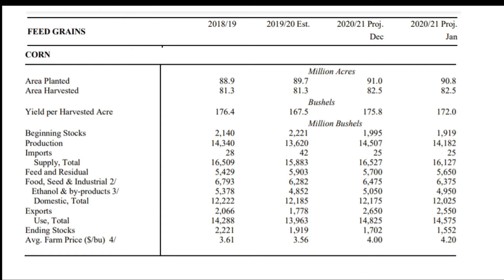Here is the report for corn, which is part of feed grains, and I'm just going to go down the report. This is in the USDA WASDE report. We're going to go down the lines, starting with acres planted and acres harvested: 90.8 million acres planted, 82.5 million acres harvested. This is for the 2021 projection in January.